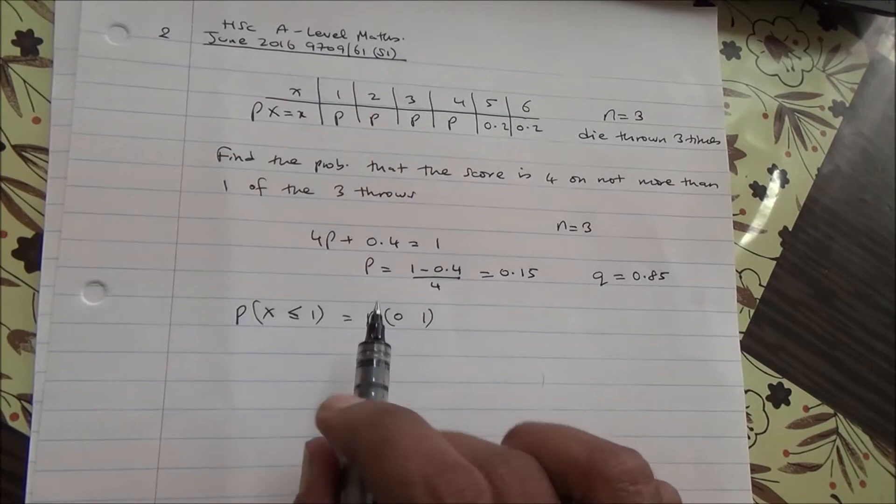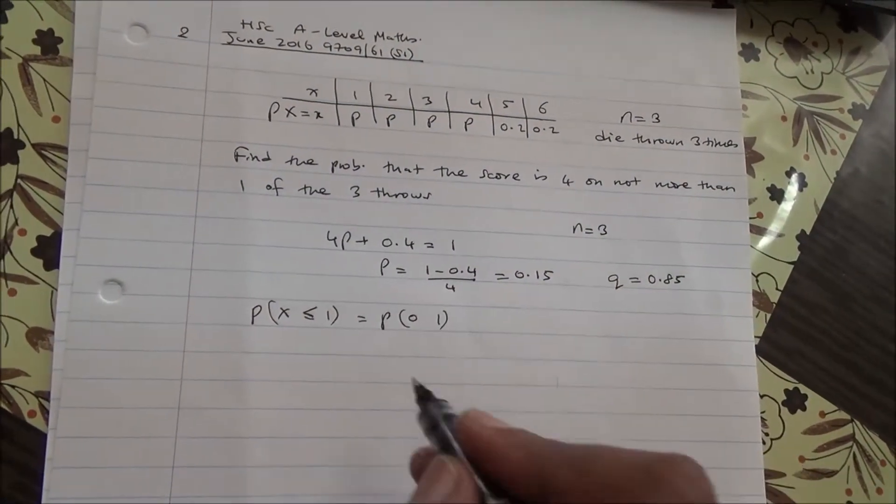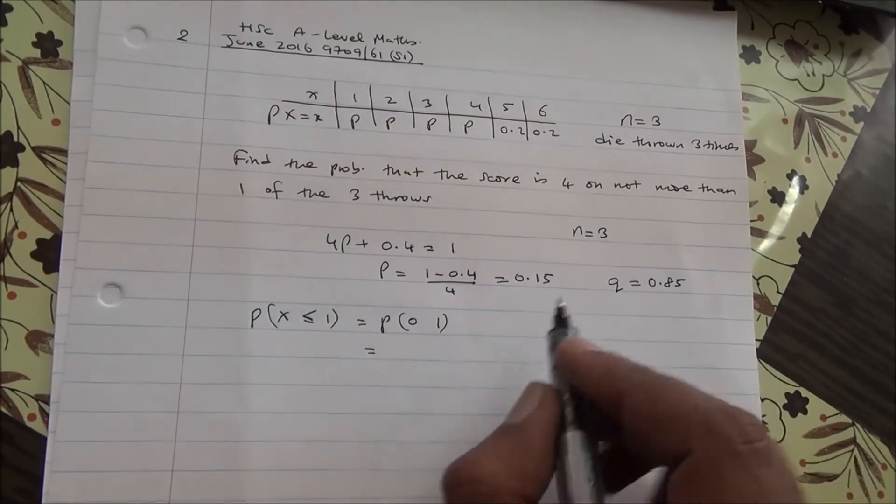That's the most it can go, because not more than 1 of the three throws. Therefore, this is a binomial distribution.